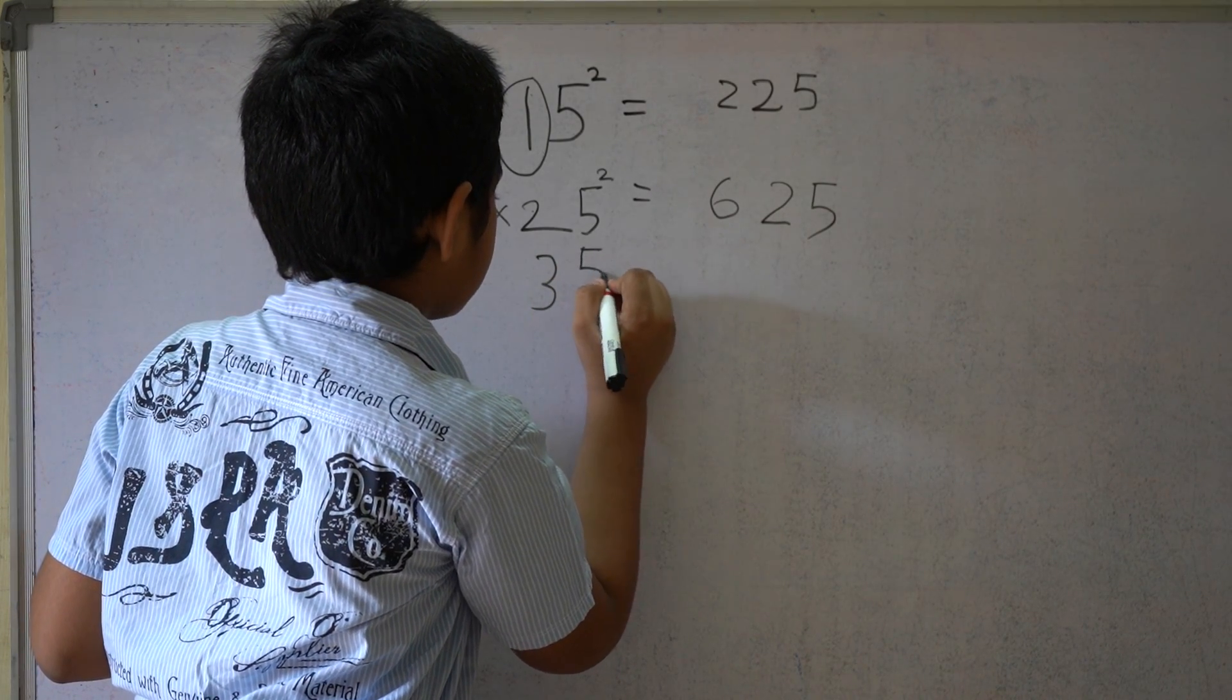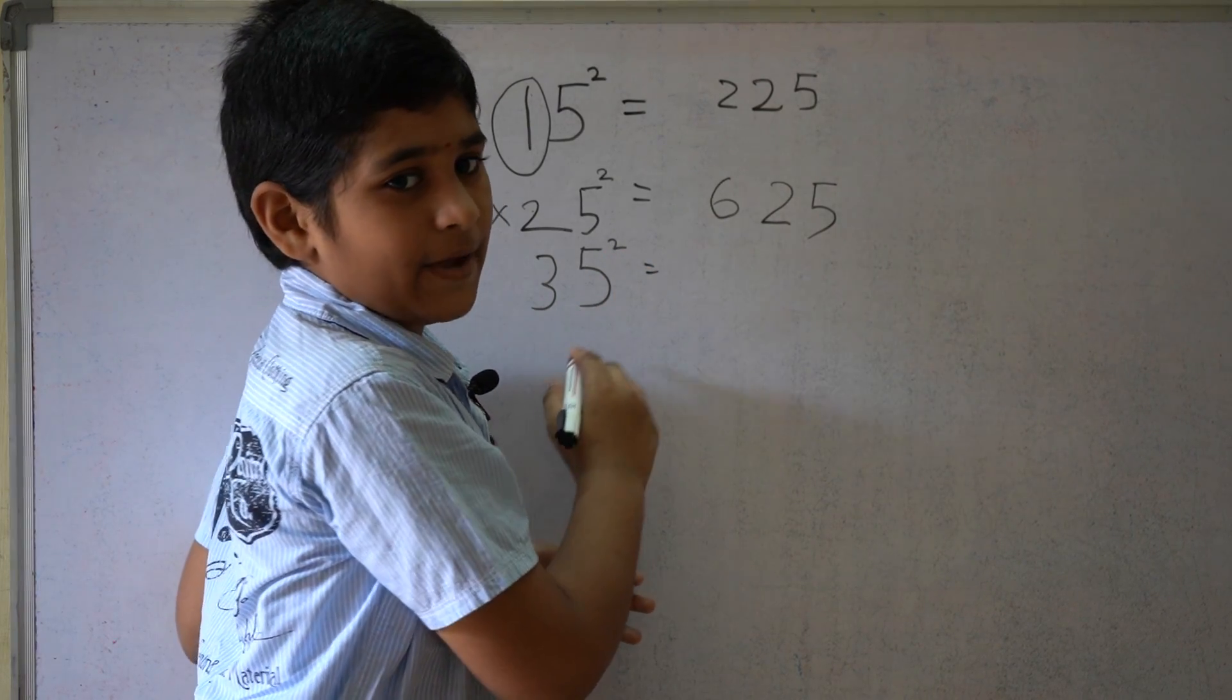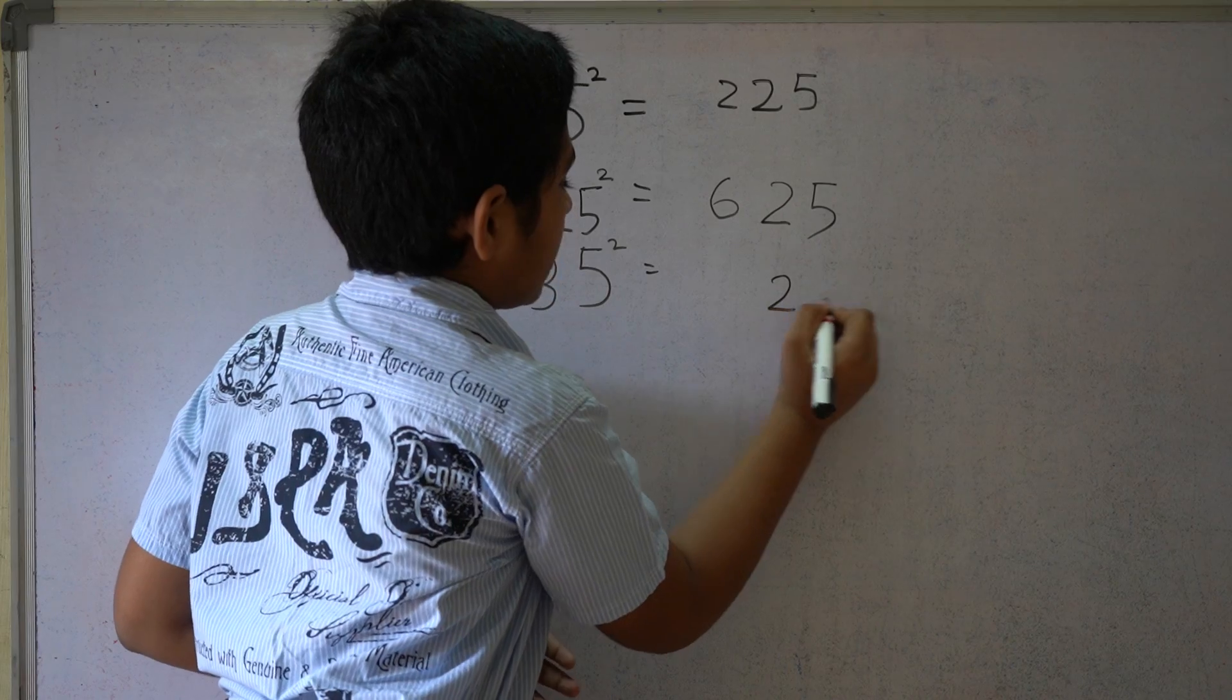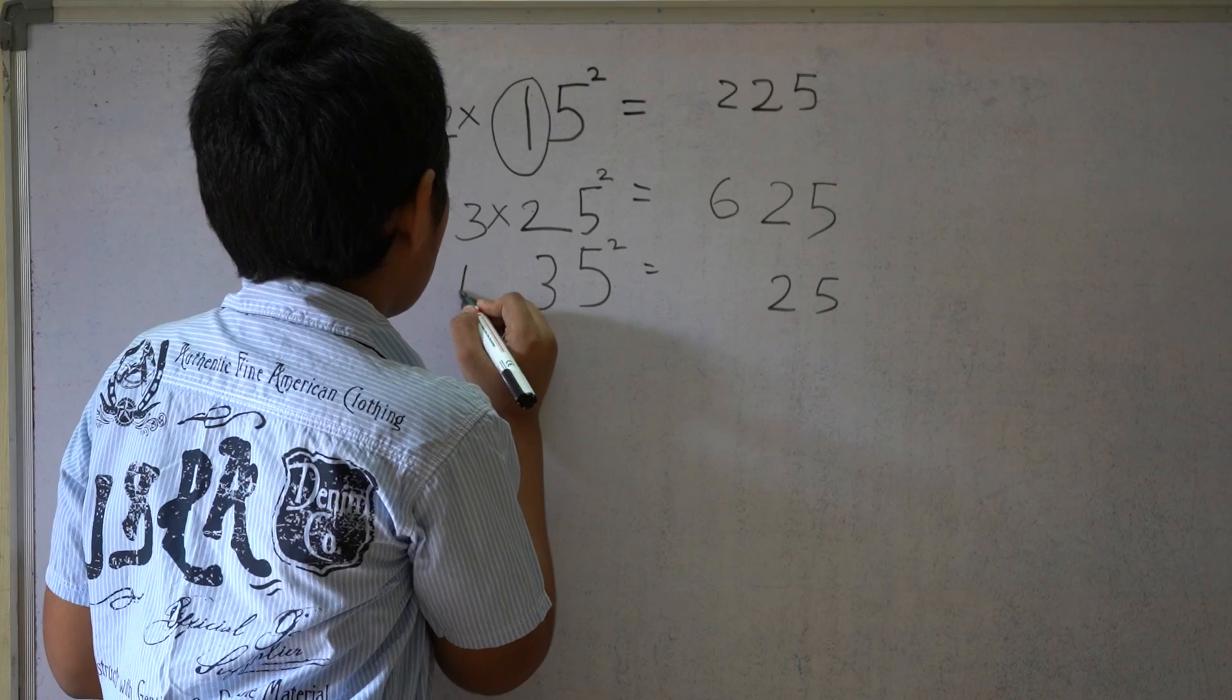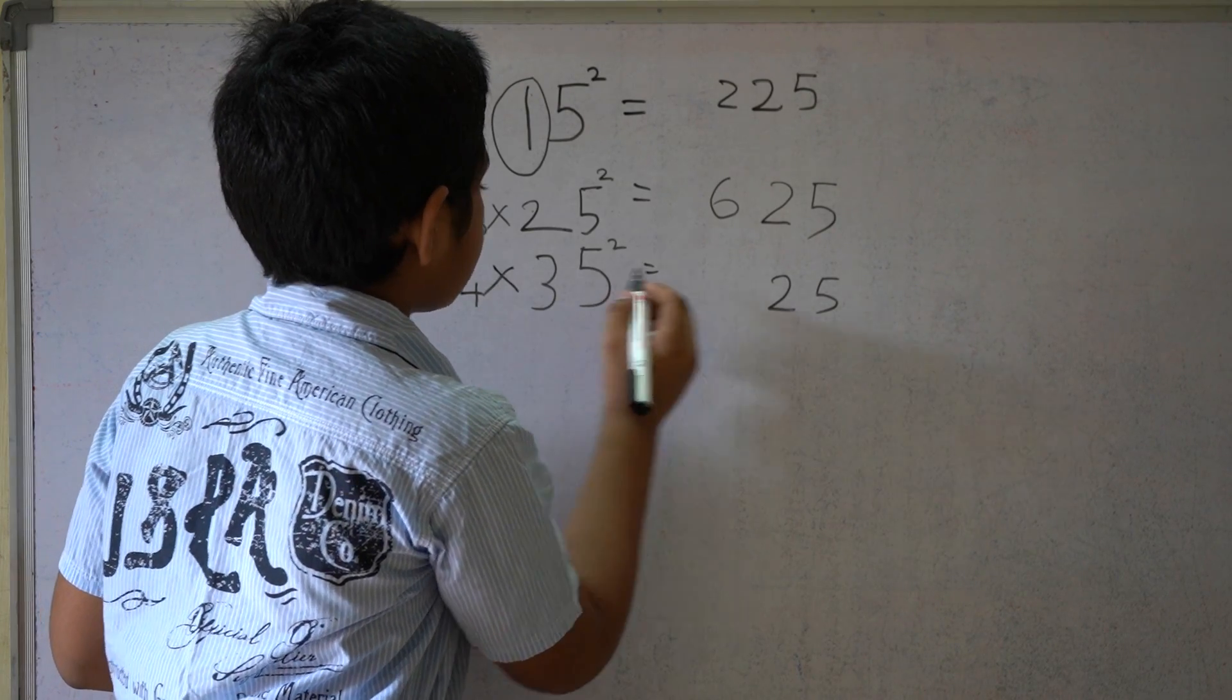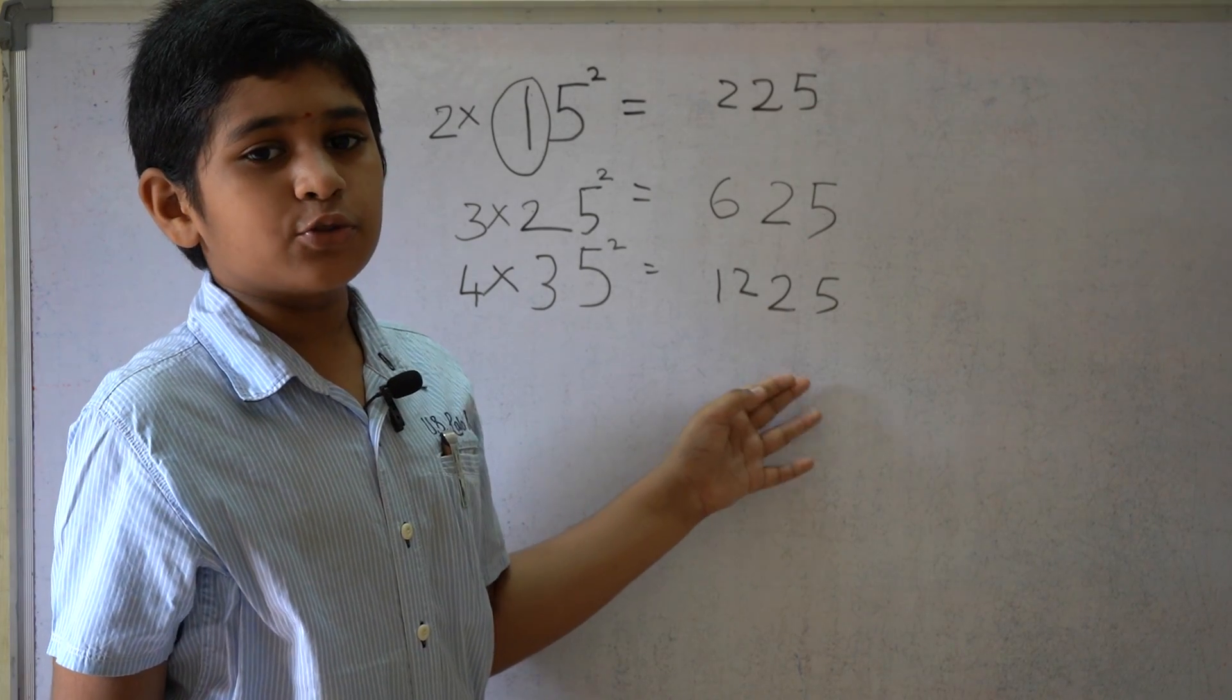35 square. 5 square equals 25. 3 times the next natural number 4 equals 12. So 1225.